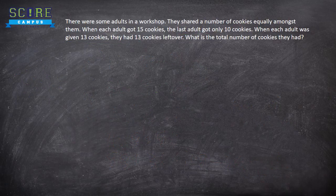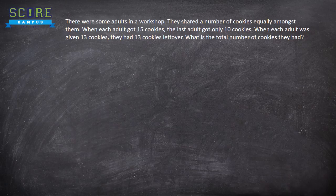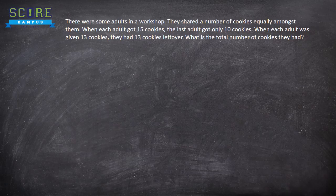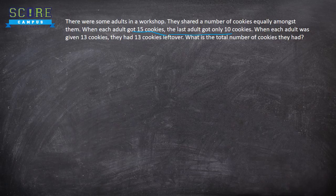Now, again, very similar example with a small variation, which if your child does not understand and only memorizes the step, he will get lost or she will get lost. So let me go through this. The format of the question is the same. There were some adults in a workshop. They shared an equal number of cookies amongst them. When each adult got 15 cookies, and this is the variation over here. The last adult got only 10 cookies. I hope you can see the variation.